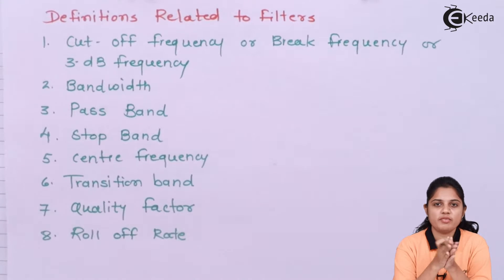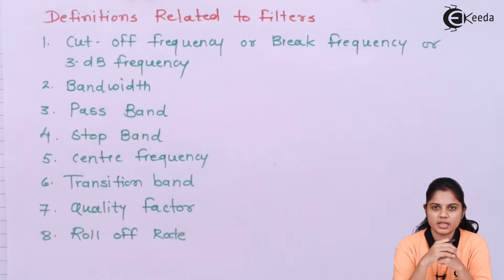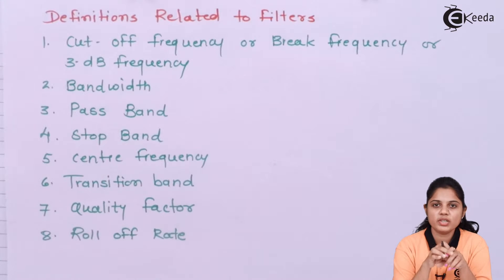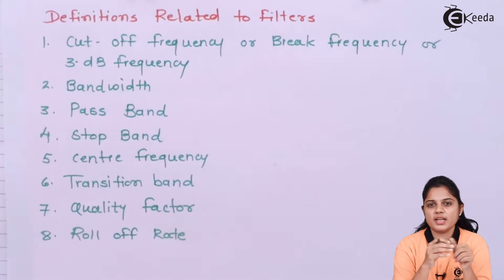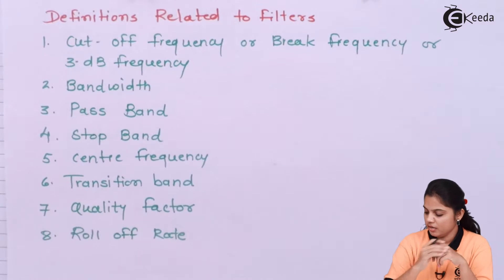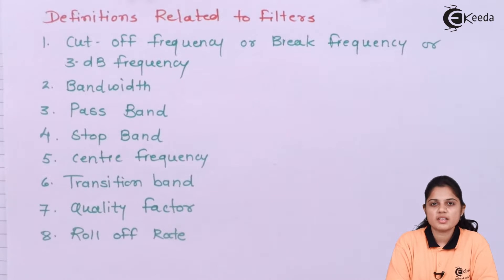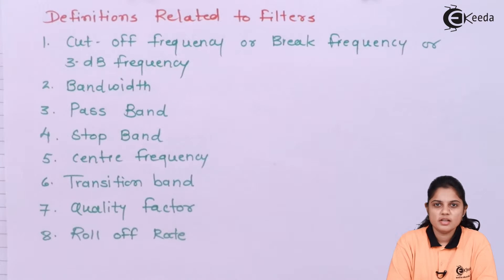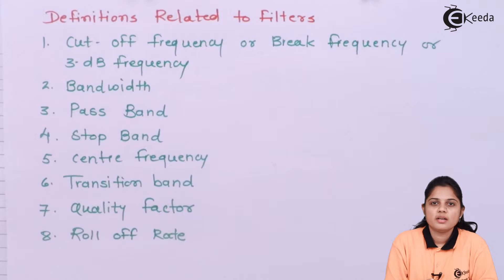Quality factor — every device should have a good quality factor. That means what is the output of that particular device for a specific given input, and in which manner the input gets affected — that is what the quality factor decides. Roll-off rate is how your gain is increasing or decreasing — the rate of change of gain of a filter is summarized as the roll-off rate.